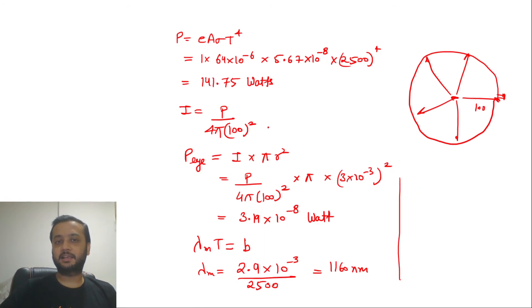We can write number of photons entering per eye. This can be written as power entering per eye divided by energy of one photon. Energy of one photon is hc by lambda.